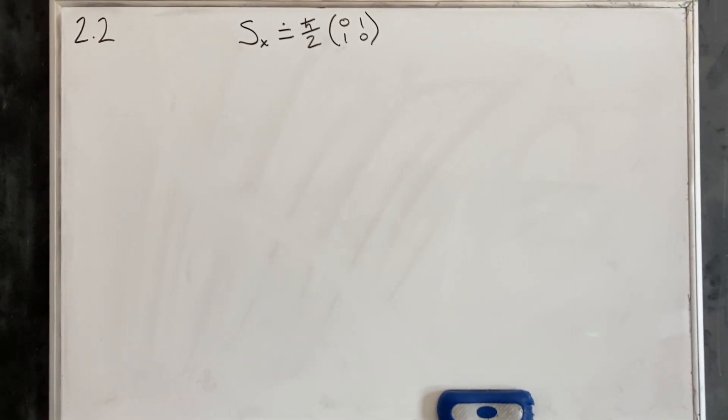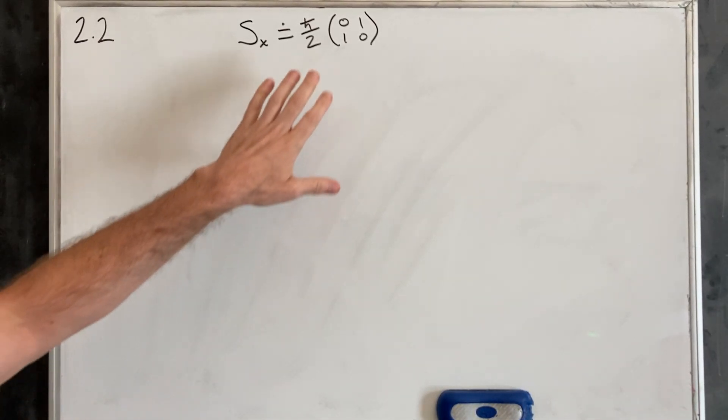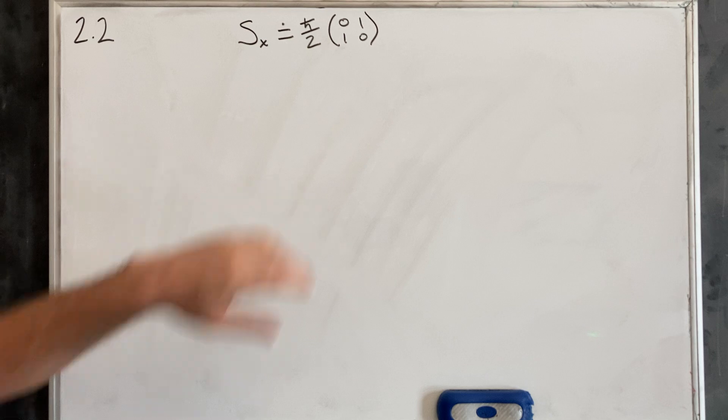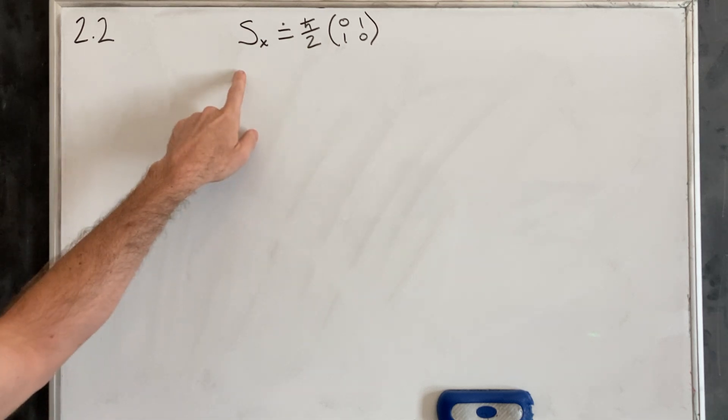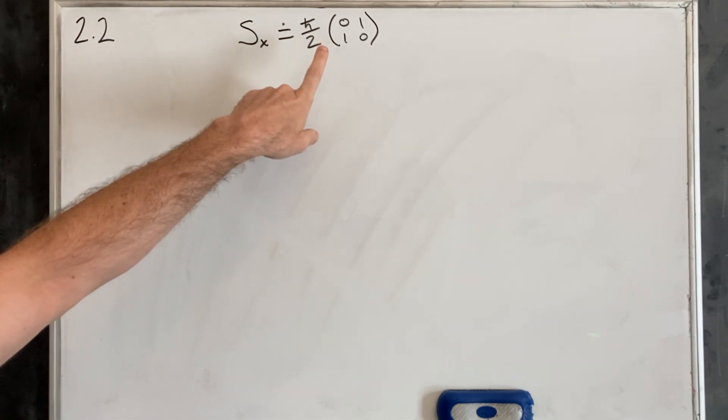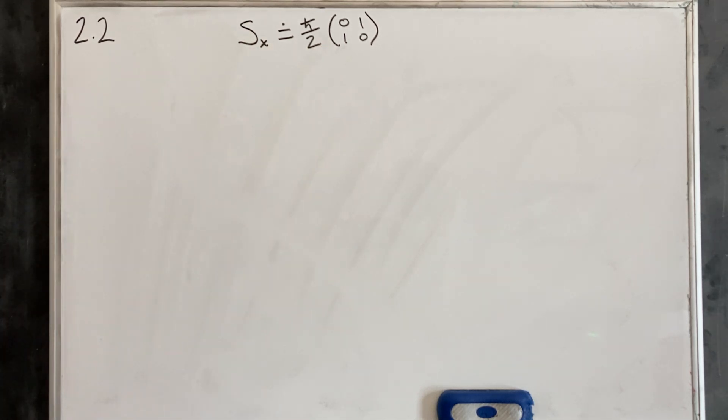For problem 2.2, from the previous problem, we found that the SX operator is ℏ/2 times the matrix [0, 1; 1, 0].